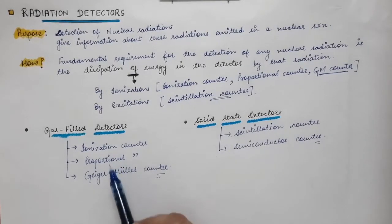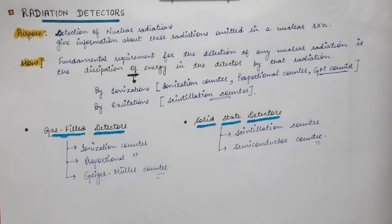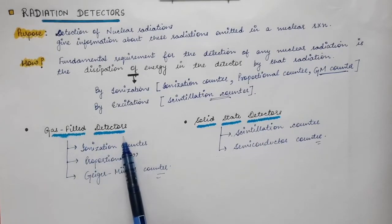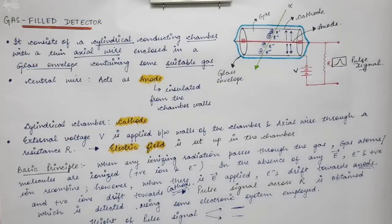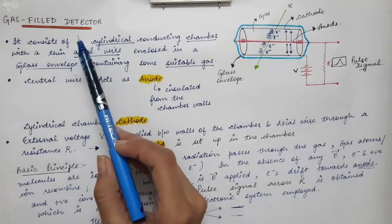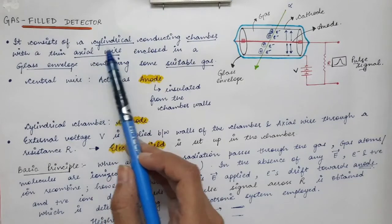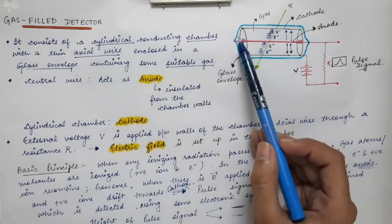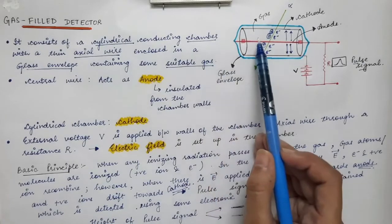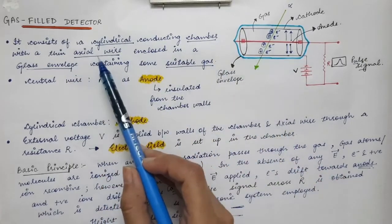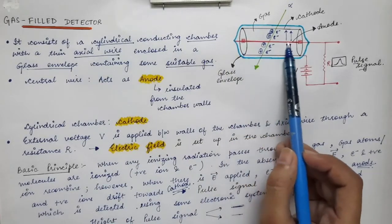These are the five types of detectors in our syllabus, and we will look at each one by one. First we will see the gas-filled detectors — their basic construction and working principle. A gas-filled detector consists of a cylindrical conducting chamber, shown in black, which is hollow from inside, and a thin axial wire shown in red, present inside the chamber along its axis.